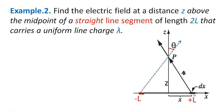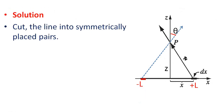Consider a small part of this segment dx at both ends. This angle is theta, and this angle also will be theta — both sides make angle theta. We need to find the electric field at a distance Z above the midpoint. We cut the line into symmetrically placed pairs. This is the midpoint of the line segment, and this small portion is dx.